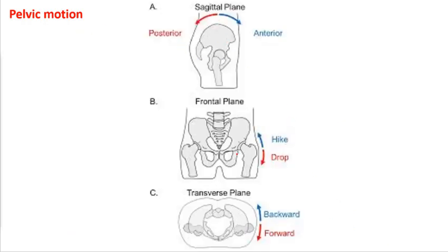The pelvis — we're going to go through and look at pelvic motion — we describe it in the three cardinal planes: sagittal, frontal, and transverse. We have your anterior or posterior pelvic tilt happening in the sagittal plane. In the frontal plane, we call it lateral pelvic rotation, though it's a lot easier to refer to as hip hike and hip drop. In the transverse plane, we're usually referring to it as right or left rotation.